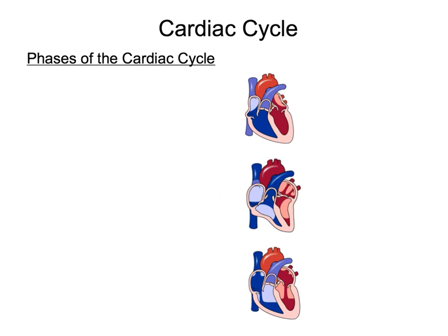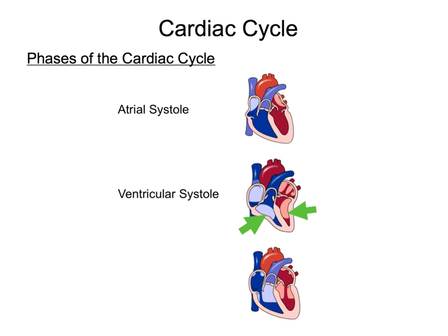There are three phases of the cardiac cycle. The first phase is called atrial systole. During atrial systole, the atria contract, forcing blood into the ventricles. The second phase of the cardiac cycle is called ventricular systole. During ventricular systole, the ventricles contract, forcing blood either into the pulmonary trunk or into the aorta.